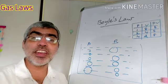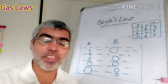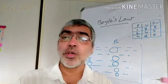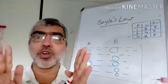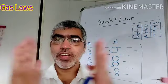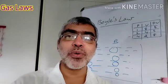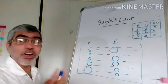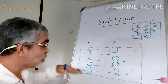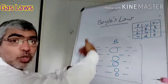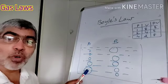When the bubbles rise from the bottom, the pressure decreases. You can change the pressure — when you change the pressure, the volume changes accordingly. If pressure is low at the top, the volume at the top is larger than at the bottom.